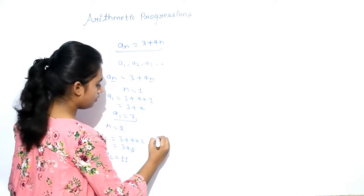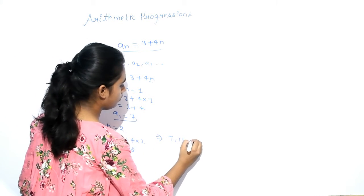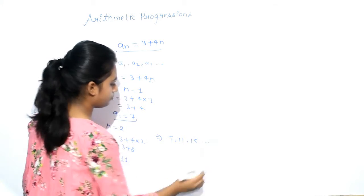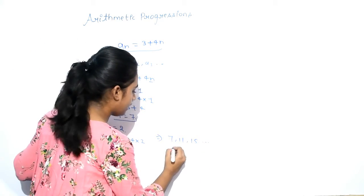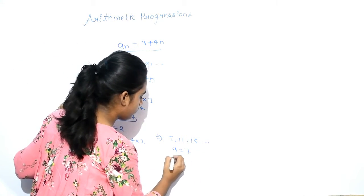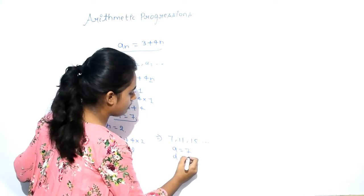That is here: 7, 11, 15. Now, as you know, our A, the first term, is 7. And D, that is 11 minus 7, is 4.